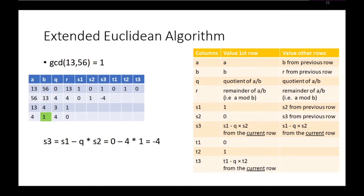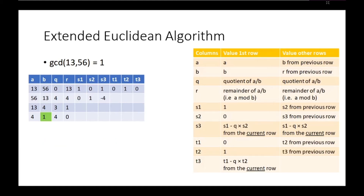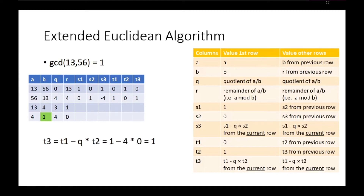The values of T1 and T2 on any row other than the first are just T2 and T3 from the previous row, so we can just copy them to the current row. Now T3 equals T1 minus Q times T2, with T1, Q, and T2 from the current row, which is now the second row. That means T3 equals 1 minus 4 times 0, which equals 1.